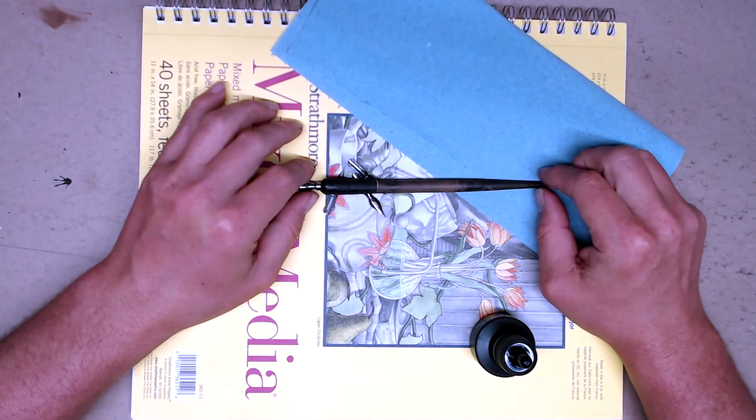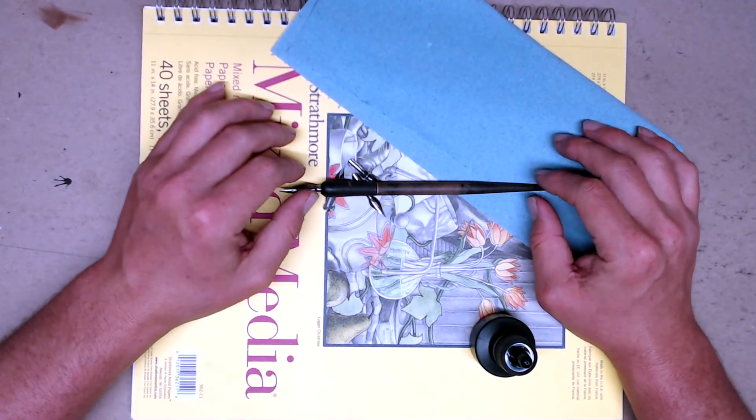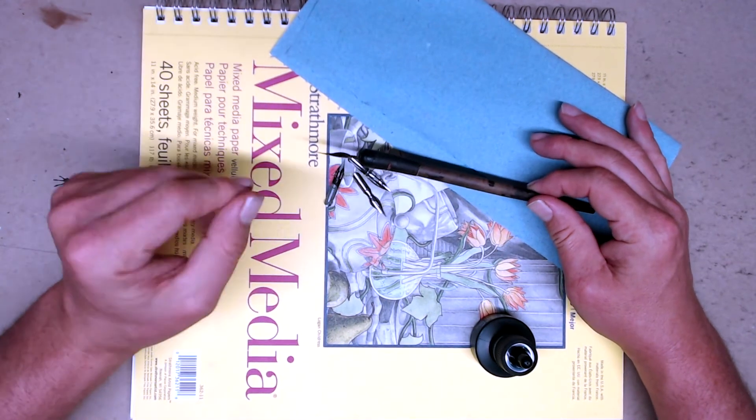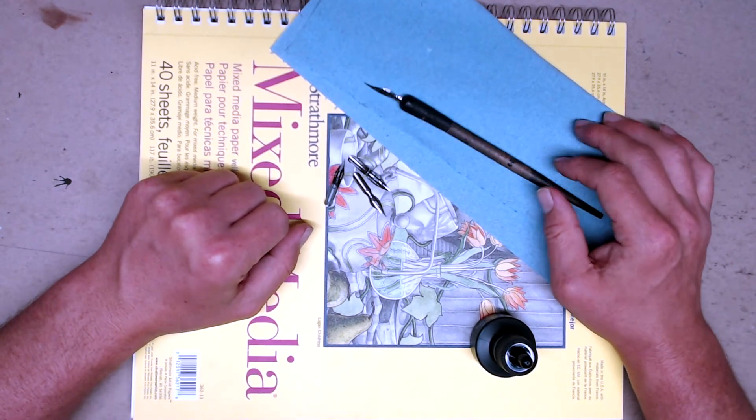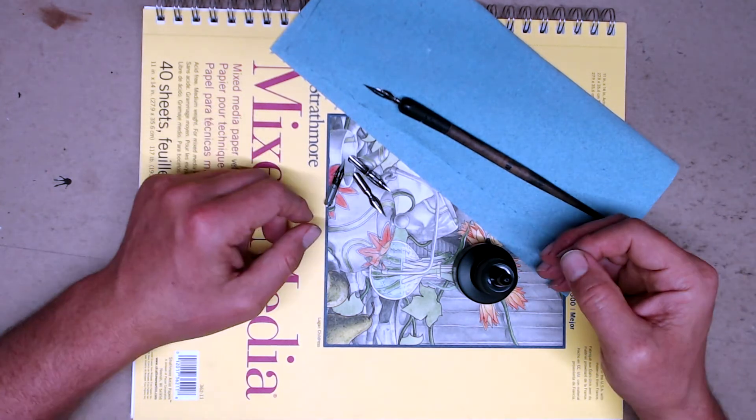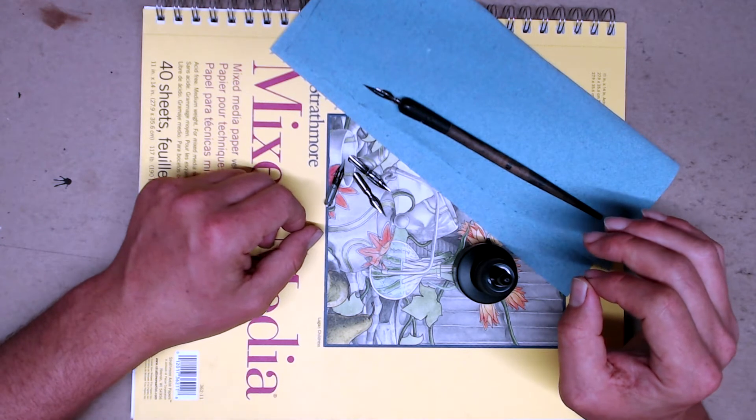The dip nib also has the advantage that you can easily change ink colors when using it. So all you need to do is take the nib out, wash it, and then boom, I can change to a different color. And really the number of different colors you can get in these inks is endless, particularly once you start mixing them. I can also make little tiny adjustments to the ink to make it flow better or to make it more transparent.